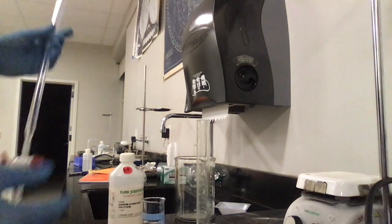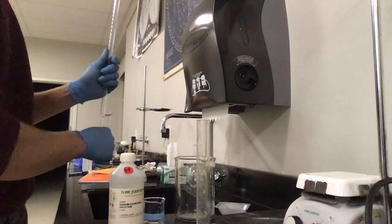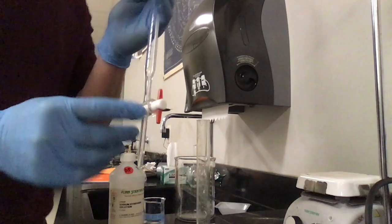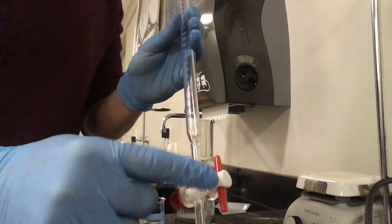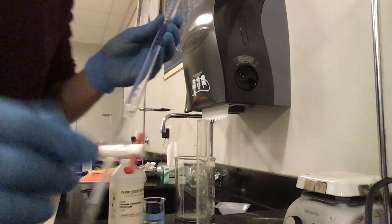Before I do that, I have to do something called seasoning my burette. And to do that, what I'm going to do, I'll talk about the parts really, really quickly. Here's the stopcock. Here's the shaft. That's the two parts of the burette.